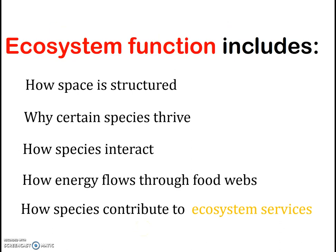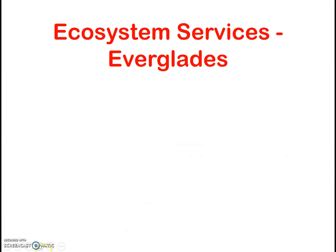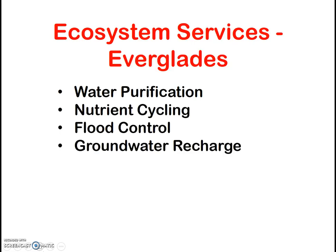Ecosystem services, as the term implies, are all the services that an ecosystem is able to provide. Check out some examples of ecosystem services provided by different types of ecosystems, shown in this table. The Everglades provide many of these same ecosystem services, including water purification, nutrient cycling, flood control, groundwater recharge, pollination, etc.